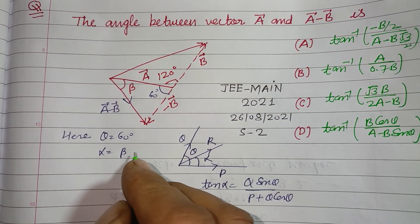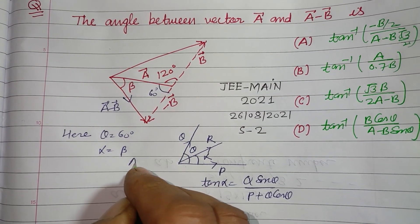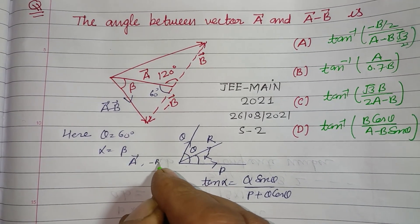And vectors are A and minus B, A and minus B.